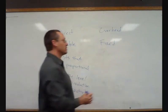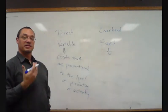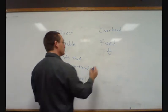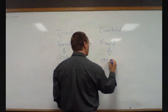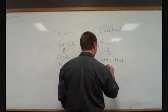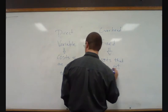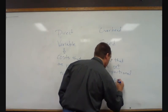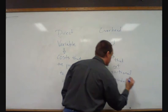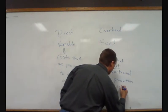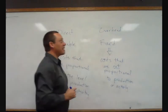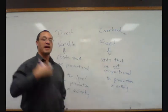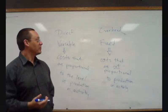Fixed costs are costs that are not proportionate to the level of activity or level of production. And the prime example of a fixed cost would be something like rent. That's the idea of overhead costs because you're keeping that rent. That rent is keeping a roof over your head.